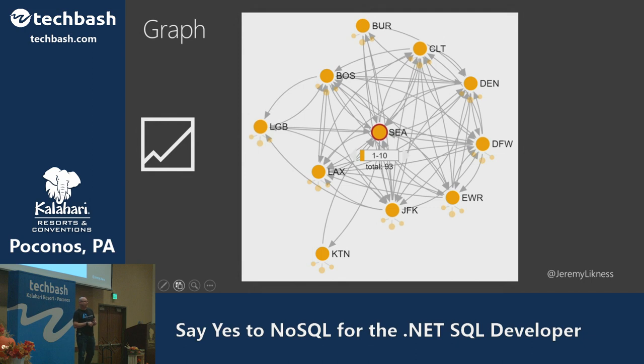A graph database organizes things into nodes or vertices that have information about them, and edges that point between nodes — those edges can also carry information. Two canonical examples: a flights database where nodes are airports and edges are flight paths (with duration or coordinates as properties), and modeling a family tree where nodes are individuals and edges represent relationships.